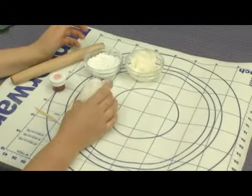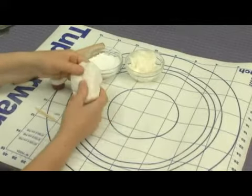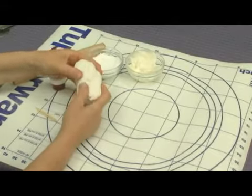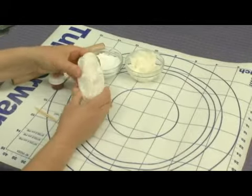For the ribbons on our ballet slippers, we're going to make them out of fondant. This is a ready made product that you can buy in the cake decorating section of most craft stores or cake decorating specialty stores.